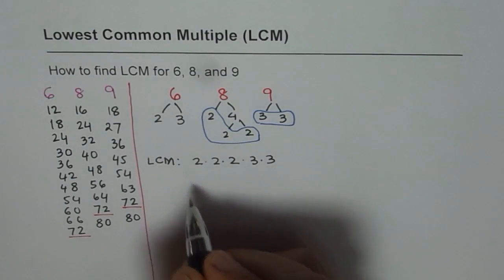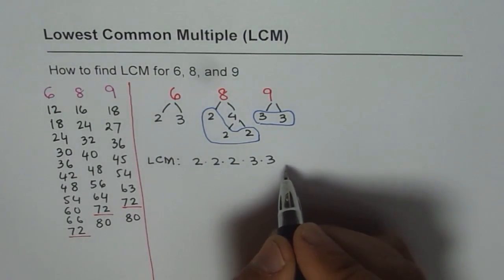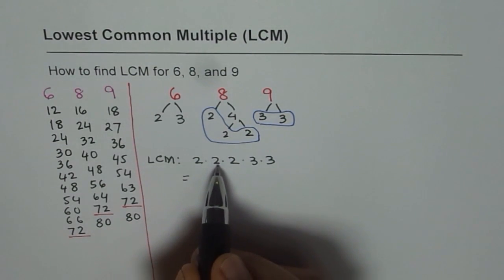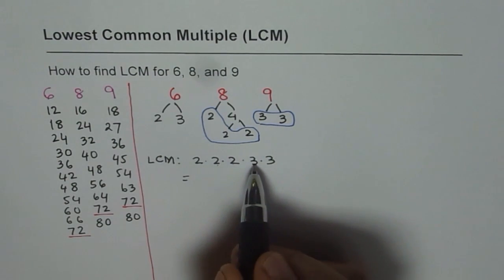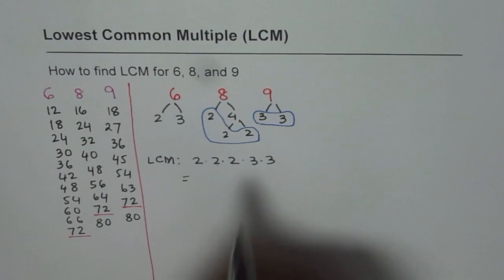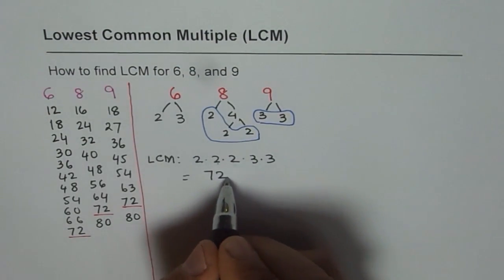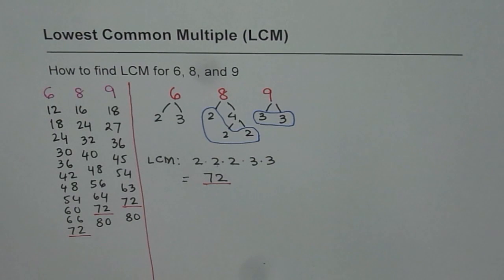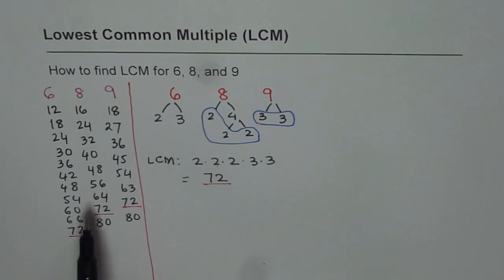Let's multiply them and get the answer. 2 times 2 is 4, 4 times 2 is 8, 3 times 3 is 9, and 8 times 9 is 72. So you get the same answer by prime factorization. The first method was using multiples; the second one was prime factorization.